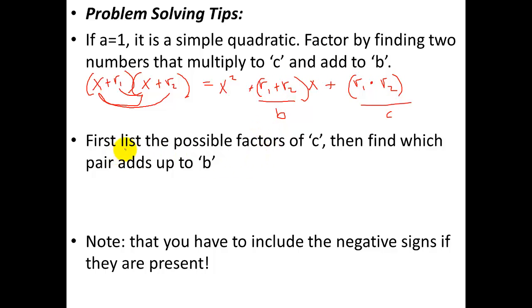The easiest way to do that is by listing the factors of c. Whatever number you have right here, factor it out, because whatever your answer is, is going to be two of the factors of that number. And then look at all the possible pairs of factors and see which one adds up correctly to your b value in the middle.